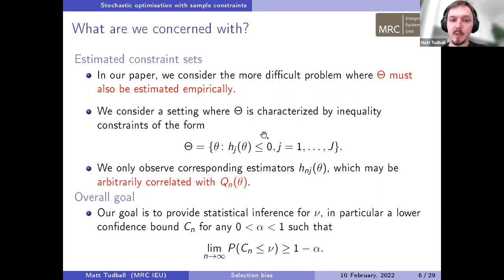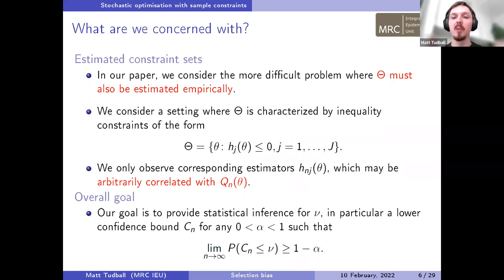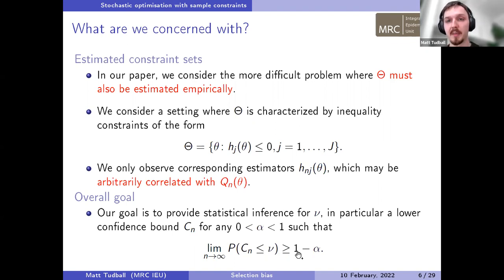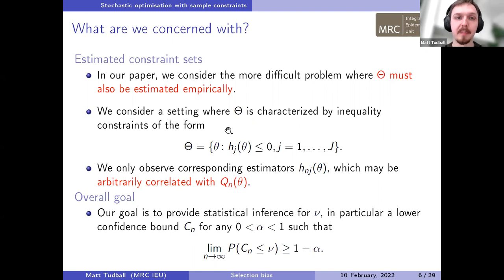Our goal is to provide statistical inference for nu — the infimum of Q over capital Theta — where both Q and Theta must be estimated. Specifically, we want a lower confidence bound C_n such that P(C_n ≤ nu) is bounded below by 1 - alpha as n grows large.